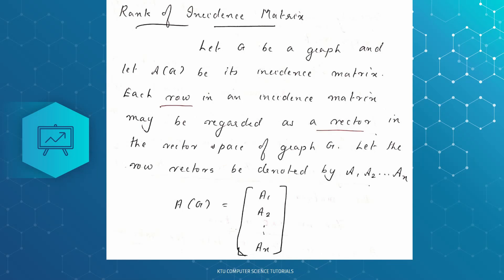We have a graph G. Let G be a graph and A of G be its incidence matrix. The incidence matrix has a dimension: it is an n by e matrix, where n is the number of vertices and e is the number of edges.